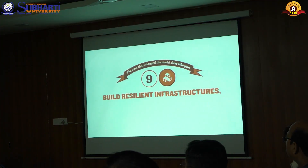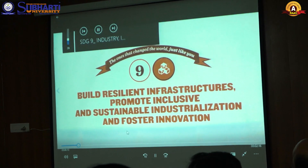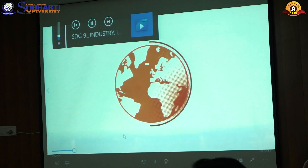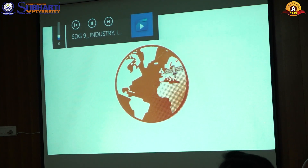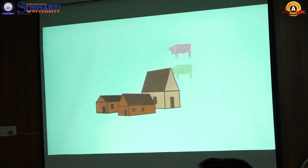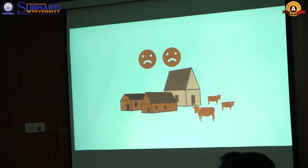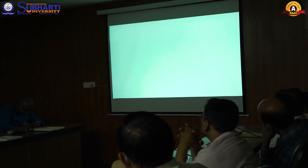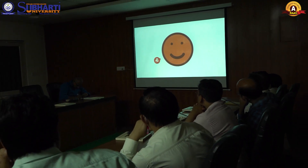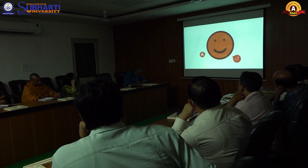Build resilient infrastructures, promote inclusive and sustainable industrialization and foster innovation. It sometimes seems strange that we share our planet with people that live in such different ways. In many developing countries and in rural areas, millions of people don't have access to agricultural production, telephonic services or roads. Everybody should have access to sustainable and quality infrastructures and work in a sustainable industry with clean processes. This would improve productivity and income, access to basic services and would help protect our ecosystems.